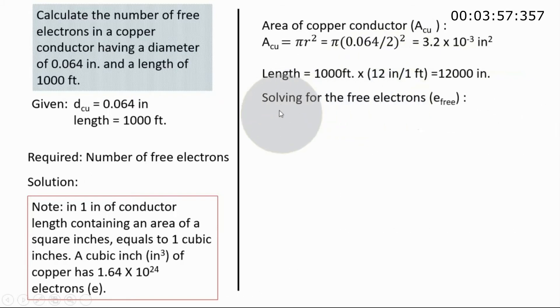And for the free electrons now, we are solving for the free electrons. For the formula of that, we take the area and multiply it by the length. We know already that the area times the length will give us the volume of our material. So this is actually the volume of the conductor.